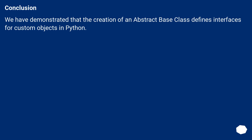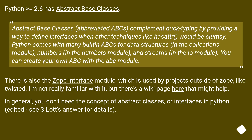Conclusion: We have demonstrated that the creation of an Abstract-based class defines interfaces for custom objects in Python. Python >= 2.6 has Abstract-based classes — ABCs — which complement duck typing by providing a way to define interfaces when other techniques like hasattr would be clumsy.